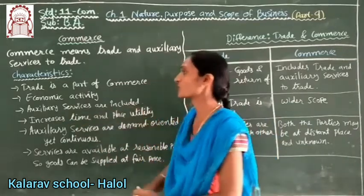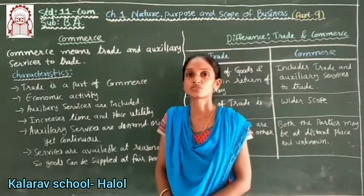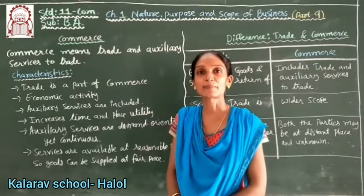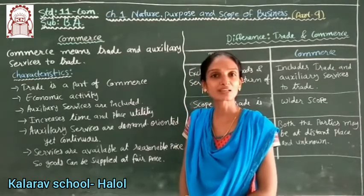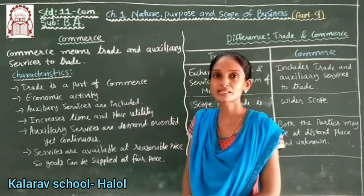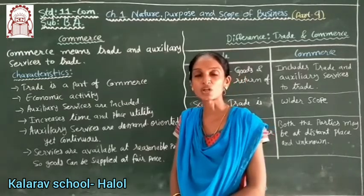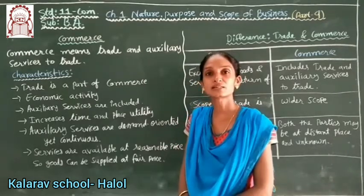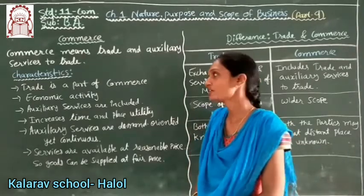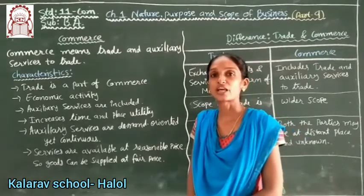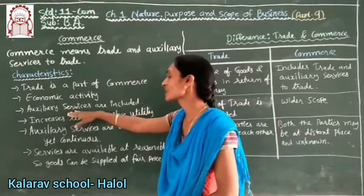Auxiliary services are also included in commerce. For example, banking: if you need to pay a party hand-to-hand it is possible domestically, but our country has its own currency and America has the dollar. So for international trade, exchange of money through the bank is possible. Transportation, godowns, and many other facilities are all auxiliary services that are included.